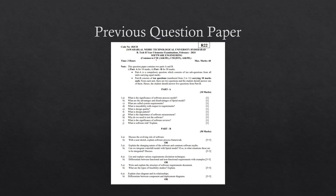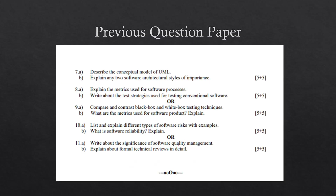This subject is common to CSC, AI/ML, IoT, and related branches. Looking at the previous question paper: discuss the evolving role of software, explain the software process framework, explain the changing nature of software and common software myths, and whether waterfall model can be integrated with spiral model. These are the kinds of questions being framed. The fourth and fifth units are covered in the second part. Please take a screenshot if needed.